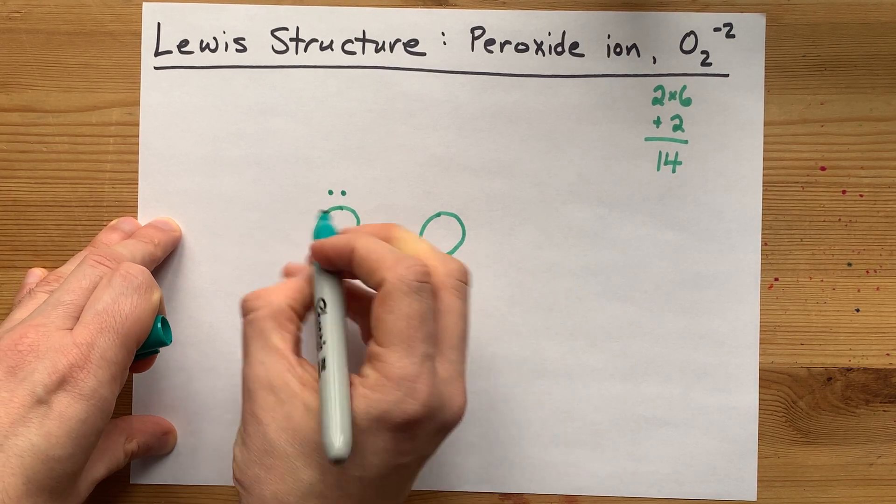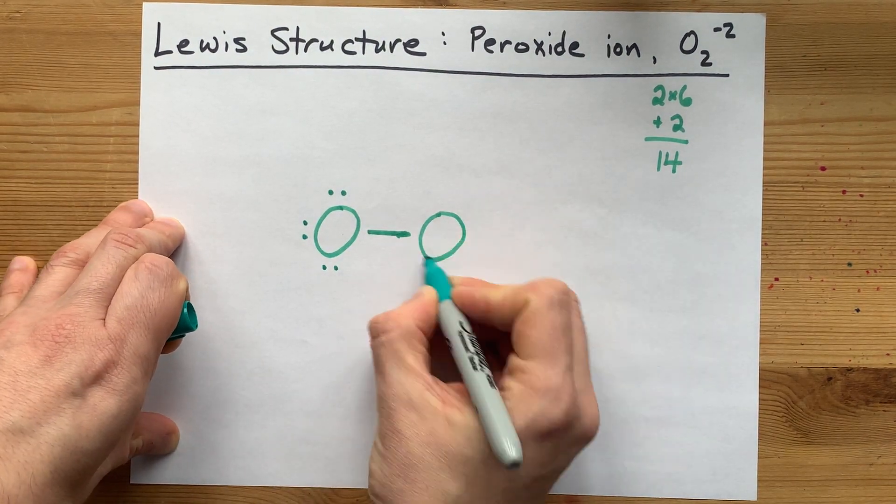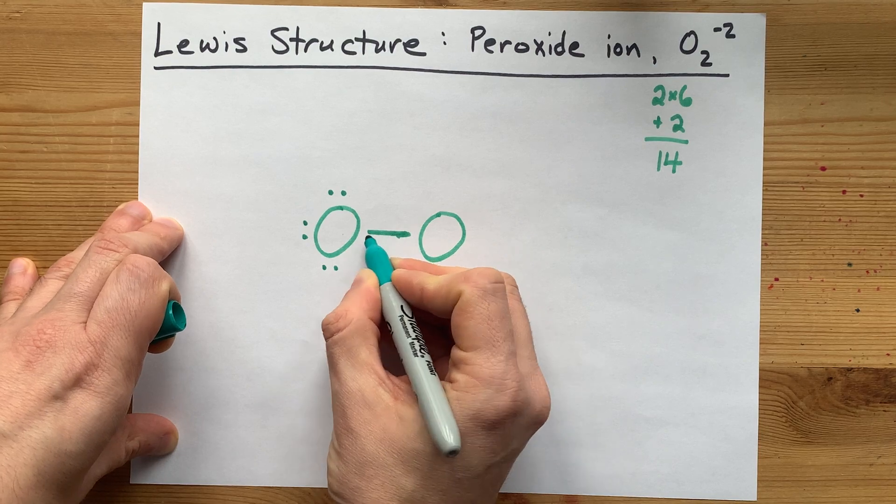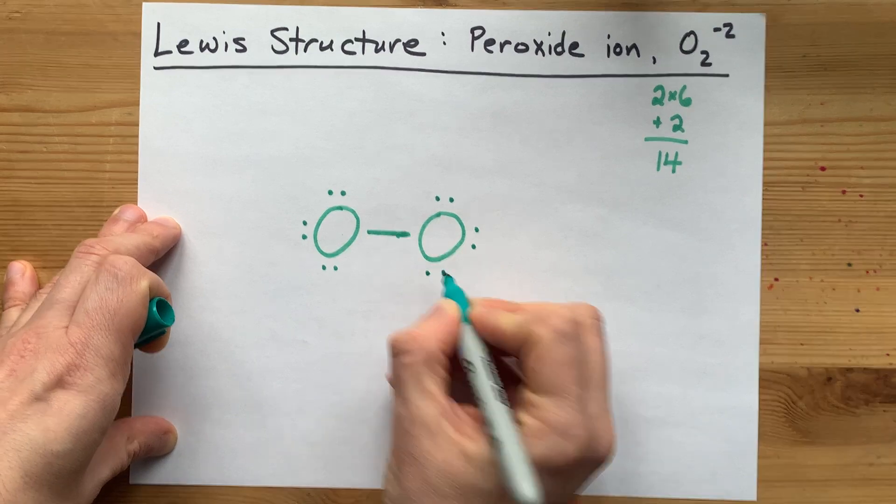So this oxygen has two, now it has three, four, five, six, seven, eight. And this oxygen—we've already counted these two—bring nine, ten, eleven, twelve, thirteen, fourteen.